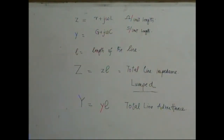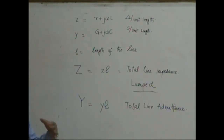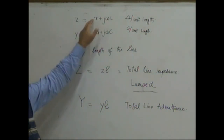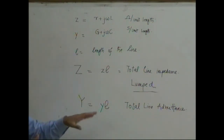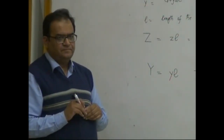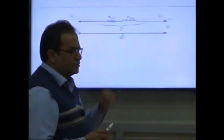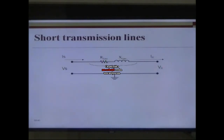We are assuming that we have this information available to us. There is a complete chapter in your book on how to derive these values, but for the purpose of this course we assume this information is given. When modeling a short transmission line, our assumption is that the total impedance of the line is lumped — meaning it is all concentrated in one place. For a short transmission line of, say, 60 or 70 kilometers, there is a certain total impedance.